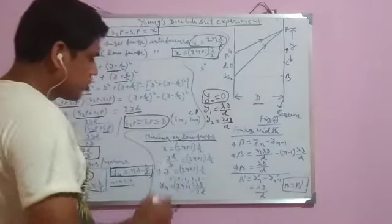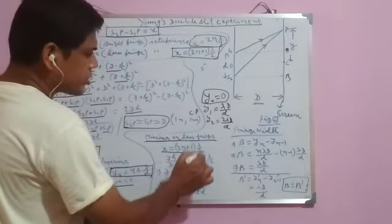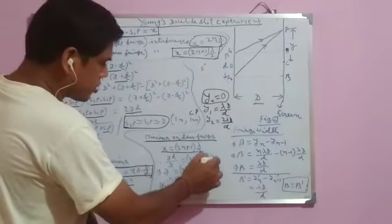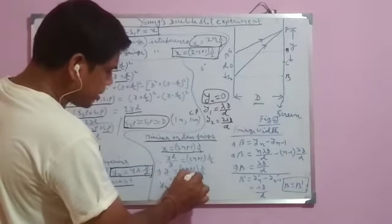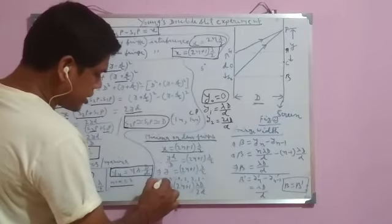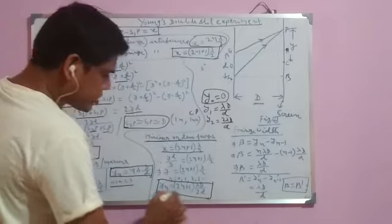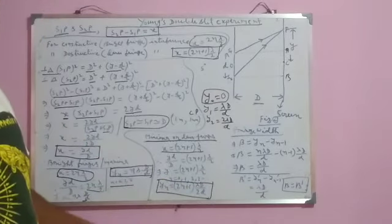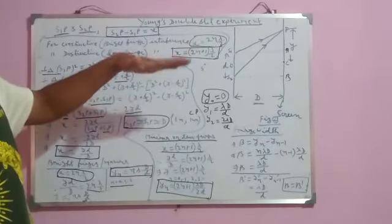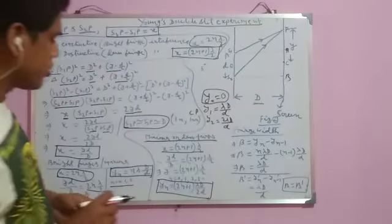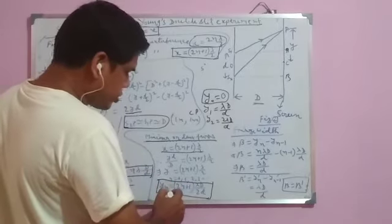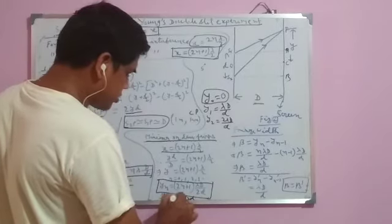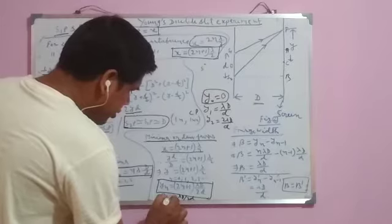For minima or dark fringes, X = (2N+1)λ/2. Substituting yd/D = (2N+1)λ/2, we get Y = (2N+1)λD/(2d). In general, YN = (2N+1)λD/(2d), where N = 0, 1, 2, 3... If N = 0, Y = λD/(2d), which gives the first dark fringe.